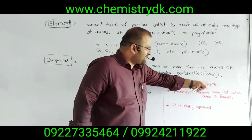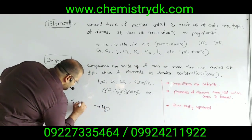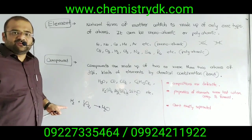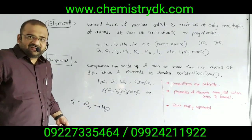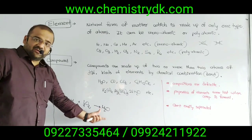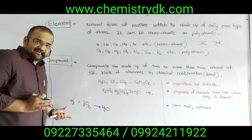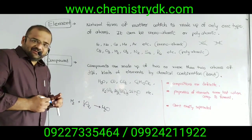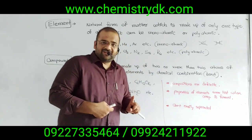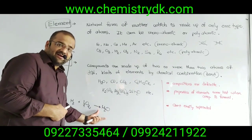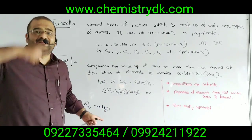Second, the properties of the constituent elements are lost when a compound is formed. For example, H2O is formed from H2 and O2. Hydrogen is a combustible gas used as a fuel, and oxygen is a supporter of combustion. But when compound H2O is formed, these properties are lost — H2O is a fire extinguisher. Third, the components of a compound cannot be easily separated. If H2O is formed, H and O cannot be separated easily — another chemical reaction is needed.